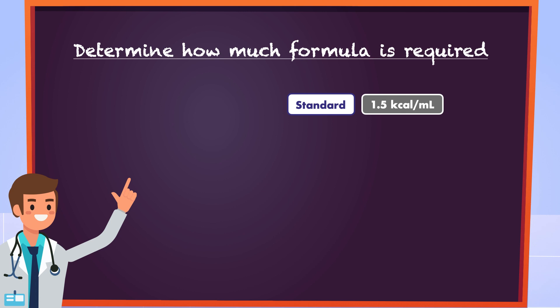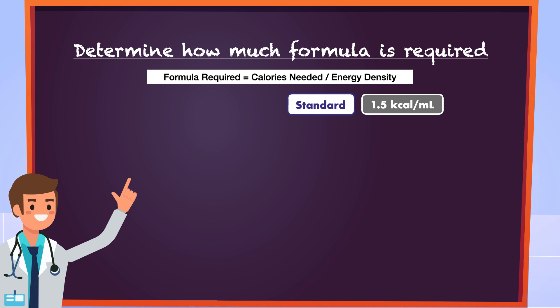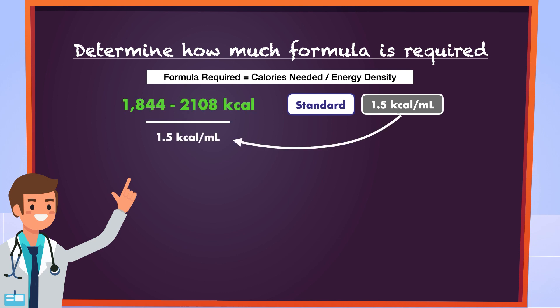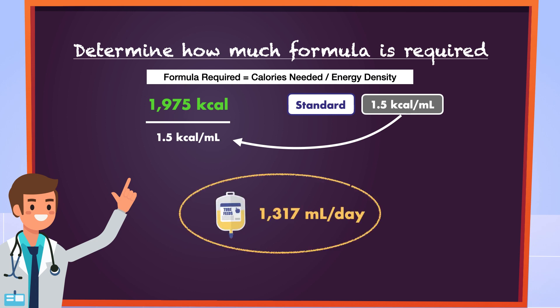Now that we have selected a formula, we can determine how much formula is required to meet the estimated nutritional needs. To do this, we take the total number of calories needed and divide it by the energy density of the formula. Instead of working with a range of calories, you can pick a single number. I'm going to take 1,975 calories, which is right in the middle of our estimated need. 1,975 calories divided by 1.5 calories per milliliter gives us 1,317 milliliters per day.